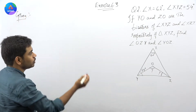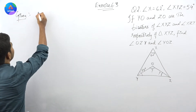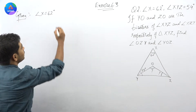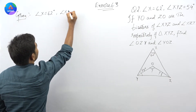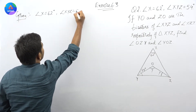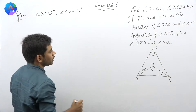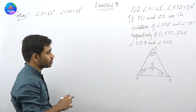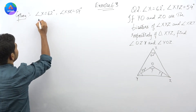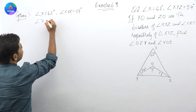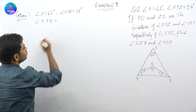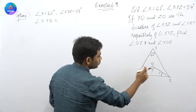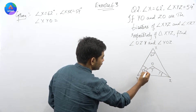Given की बात करते हैं। हमें दे रखा है angle X जिसकी value है 62 degree, और हमें दे रखा है angle XYZ जिसकी value है 54 degree। और हमें दे रखा है कि ZO और YO bisectors हैं। तो हम ये लिखे लेते हैं कि angle XYO is equal to angle OYZ — यानि कि ये वाला angle, is equal to ये वाला angle।